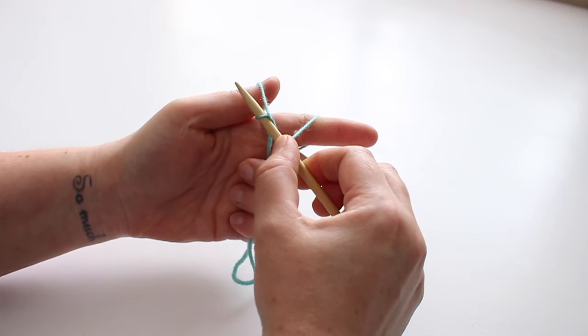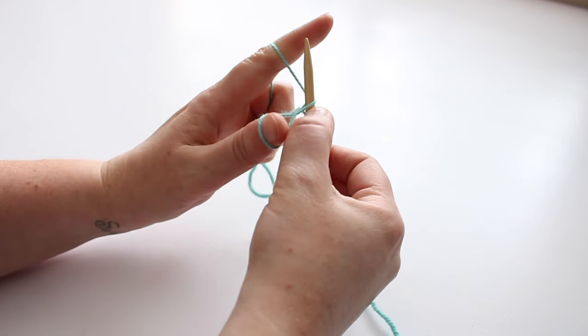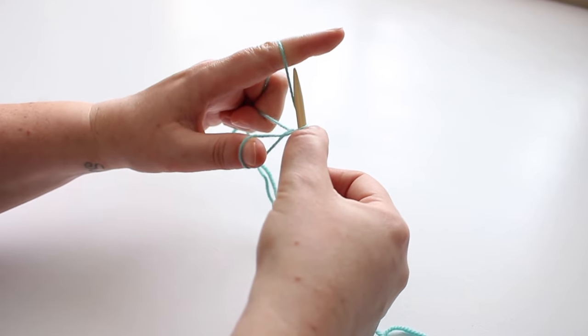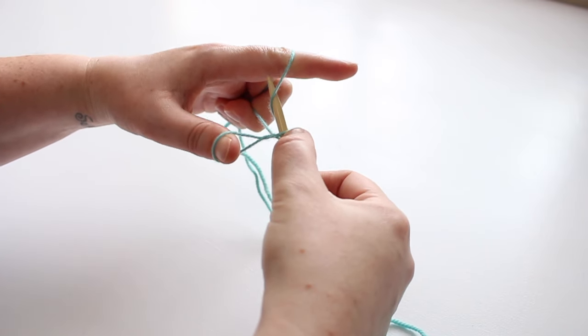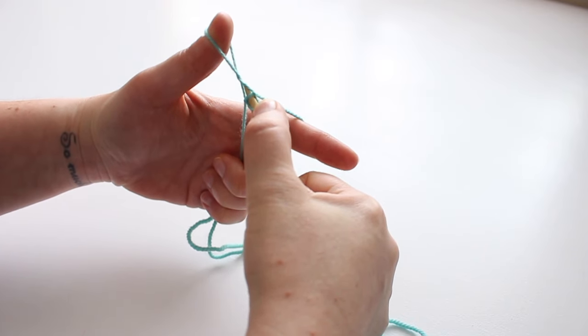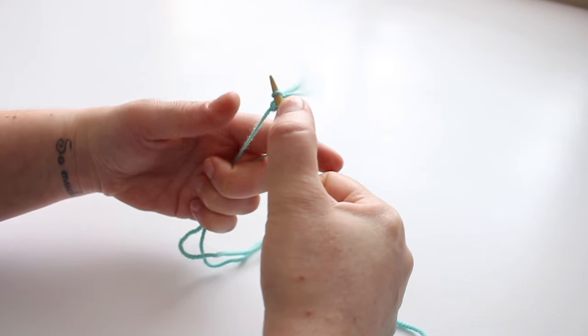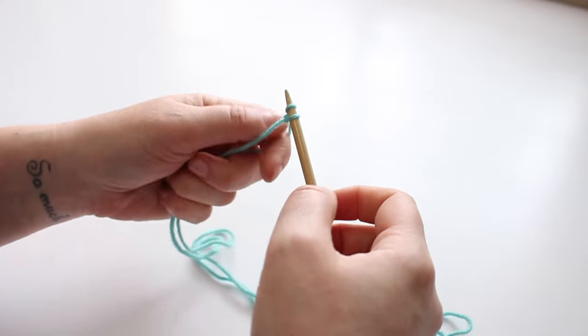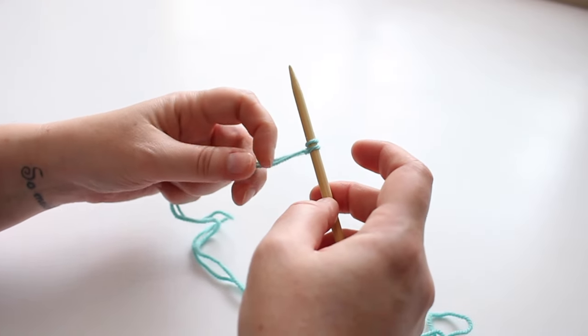Or between that loop I should say, and go backwards towards my finger. I go behind that and into this little tiny triangle. That's the hardest part of starting, so you don't lose that first stitch.